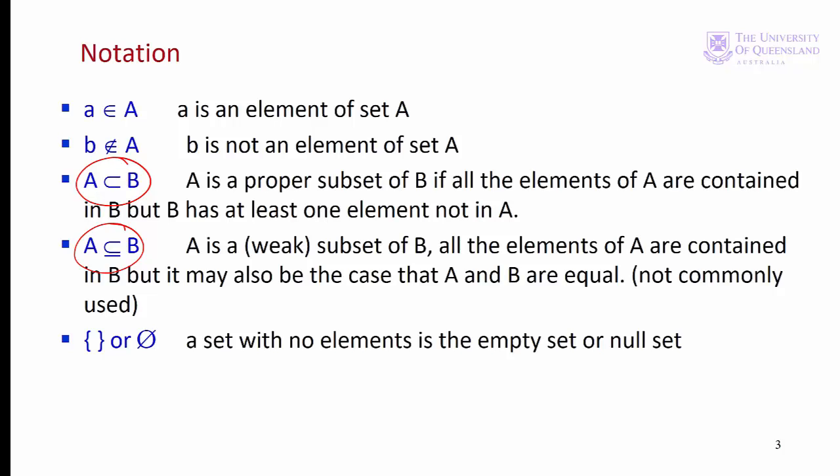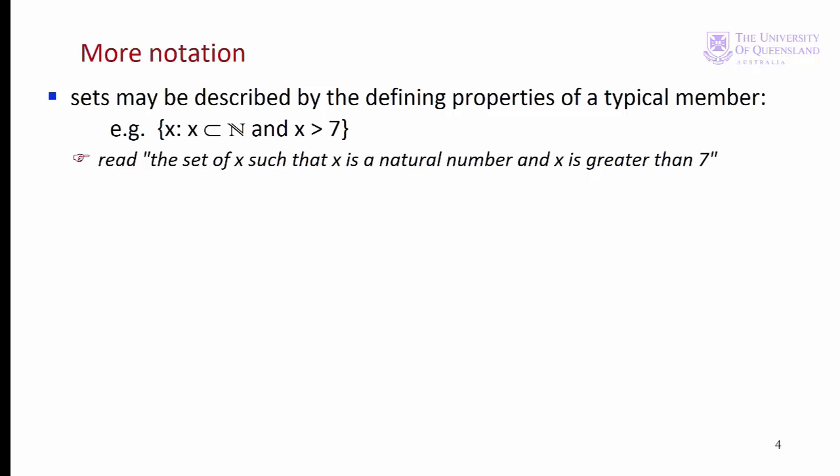We can also specify that a set has no elements. This is the null set, or the empty set. Since all sets without members are the same set, mathematicians call this the empty set. More formally, we describe a set in terms of a typical member of the set. x is a typical element, followed by a colon, and then the properties of the set. The properties here are that x is a natural number and that it is greater than 7. We read this as: the set of x such that x is a natural number and x is greater than 7.